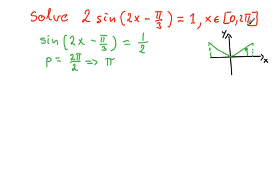And again, you repeat another cycle from pi to 2 pi. So in total, you expect to have 4 roots. So this is something that we need to be aware of.